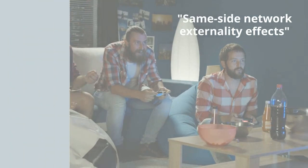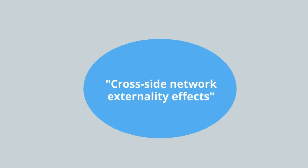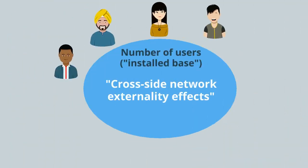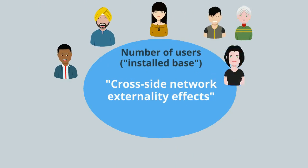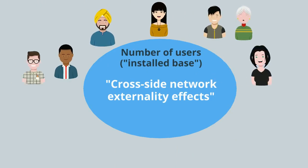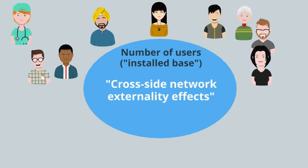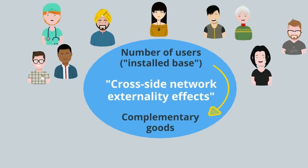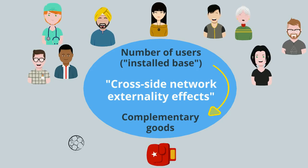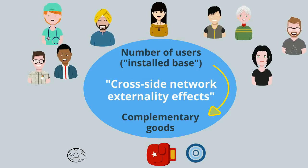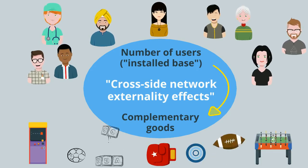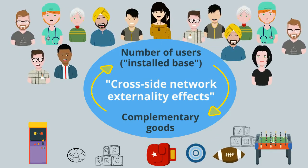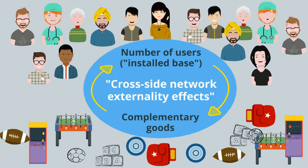There can also be cross-side network externality effects. As the number of users of a good increases, it can attract the developers of complementary goods, like games. And as the number of these complements increases, that in turn can attract even more users in a self-reinforcing effect.